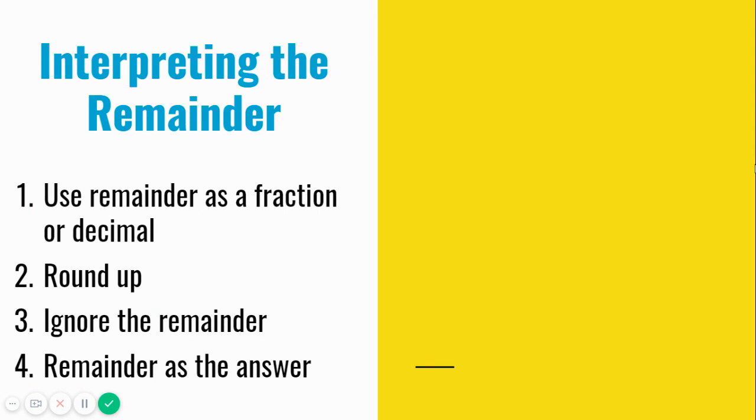Let's review the different ways to interpret the remainder. As you remember from 4th grade, there are 4 ways you can interpret the remainder. The remainder can be part of your answer as a fraction or decimal. You can round up to the next whole number. You can ignore the remainder. Or use the remainder as the answer itself.